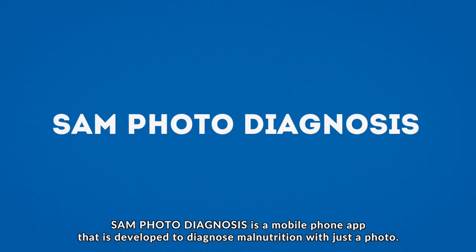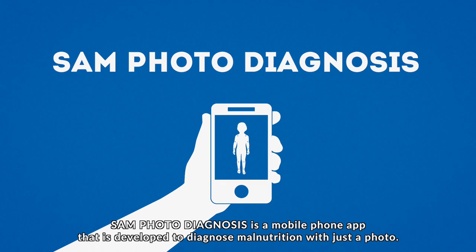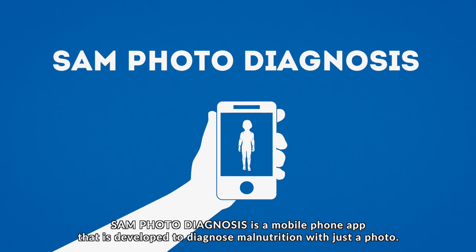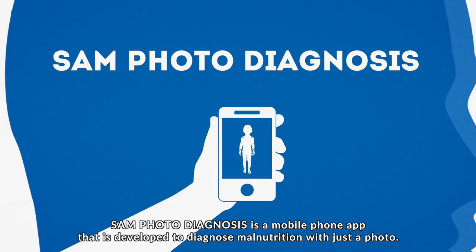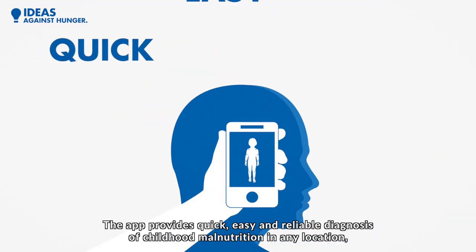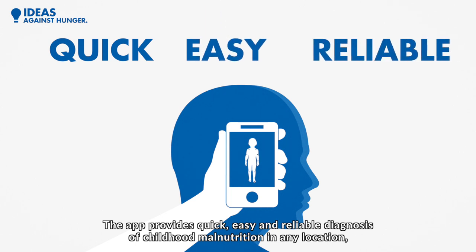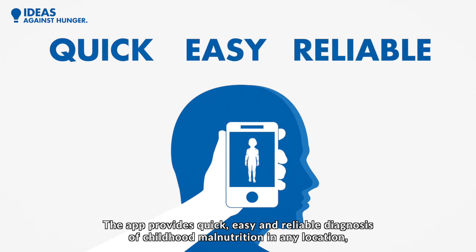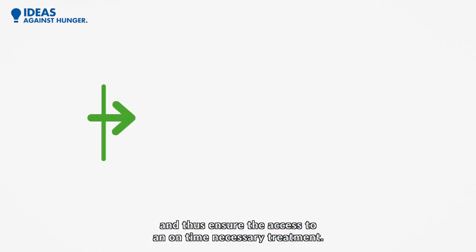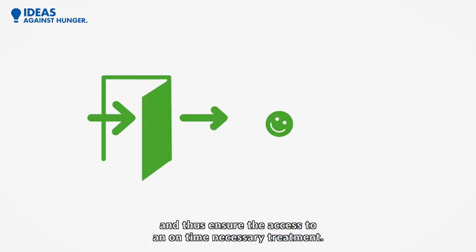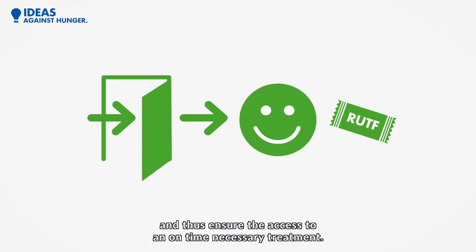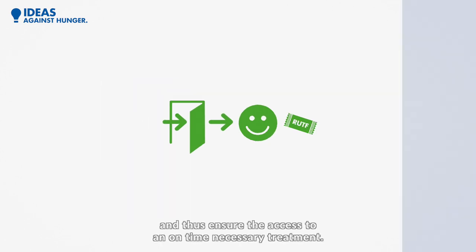Samphoto Diagnosis is a mobile phone app developed to diagnose malnutrition with just a photo. The app provides quick, easy and reliable diagnosis of childhood malnutrition in any location, and thus ensures access to on-time, necessary treatment.